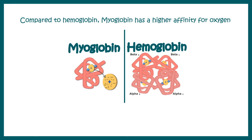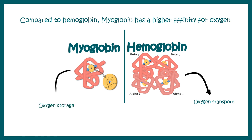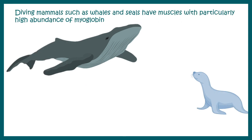In a different video we'll talk about the differences and similarities, but let's focus on myoglobin here. The major function of hemoglobin is oxygen transport, whereas the major function of myoglobin is oxygen storage. Notably, diving mammals such as whales and seals have a huge amount of myoglobin in their muscles, allowing them to dive for very long periods.